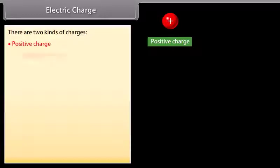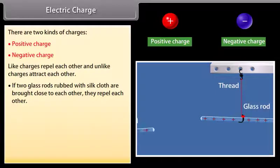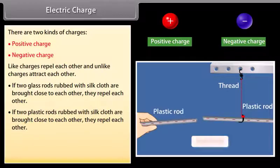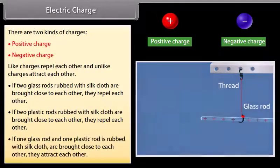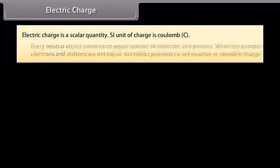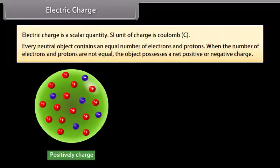Electric charge: There are two kinds of charges — positive charge and negative charge. Like charges repel each other and unlike charges attract each other. If two glass rods rubbed with silk cloth are brought close to each other, they repel. If one glass rod and one plastic rod rubbed with silk are brought close, they attract. Electric charge is a scalar quantity; its SI unit is coulomb. Every neutral object contains equal numbers of electrons and protons.